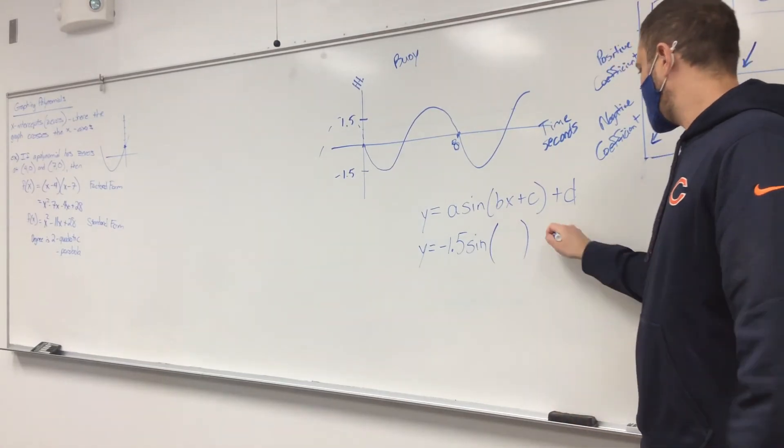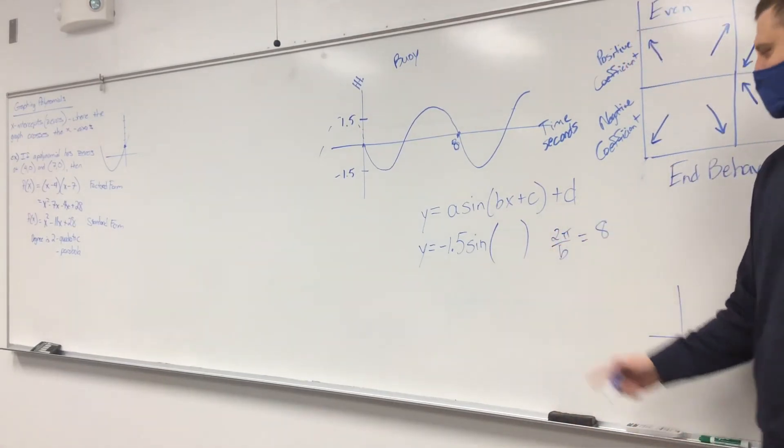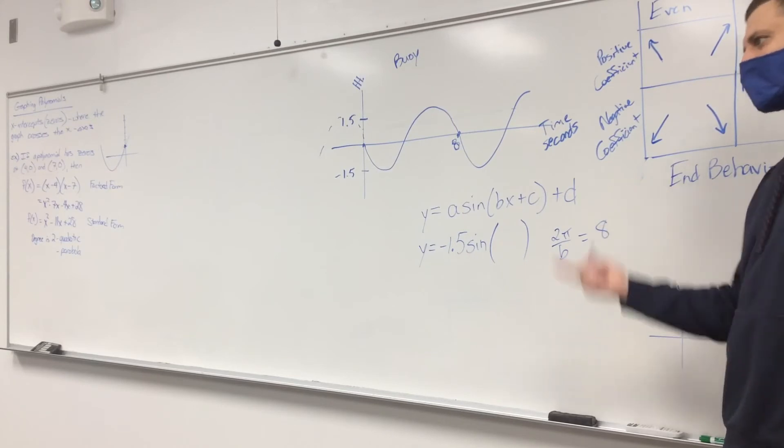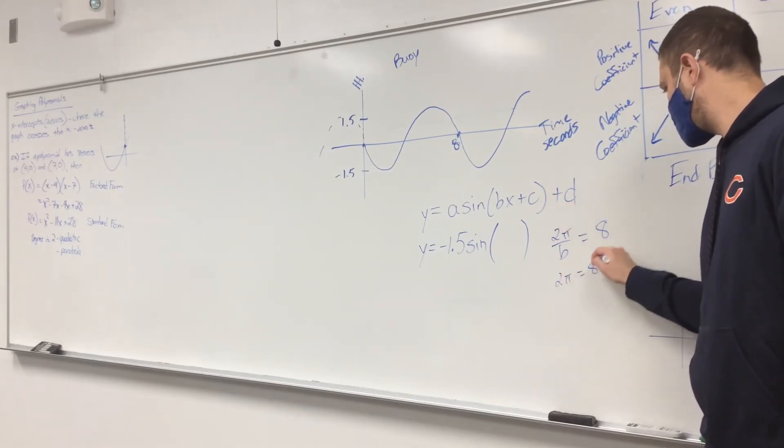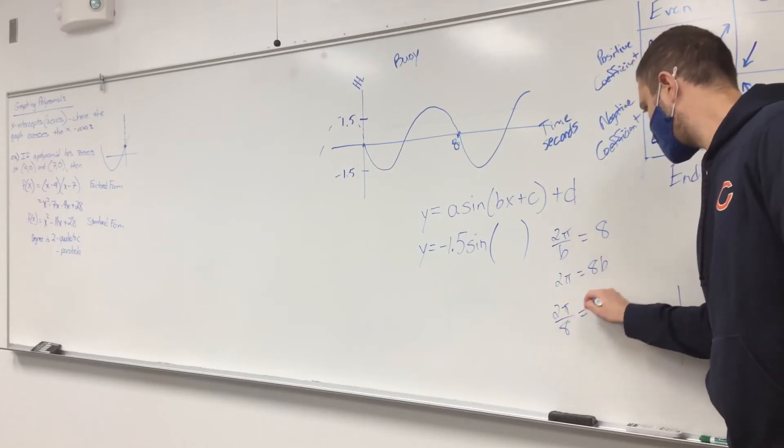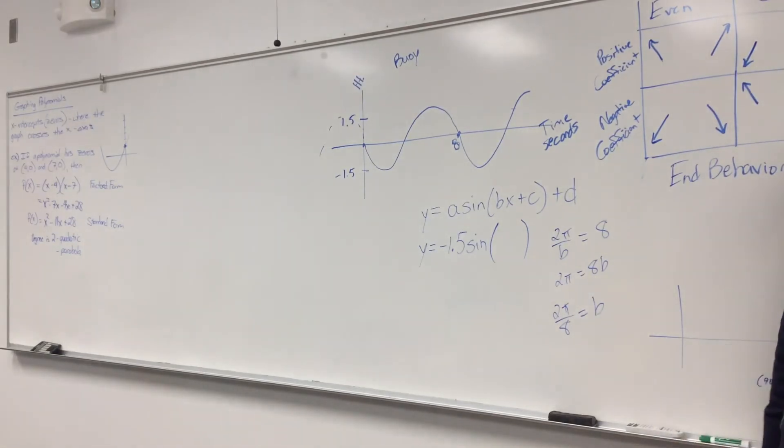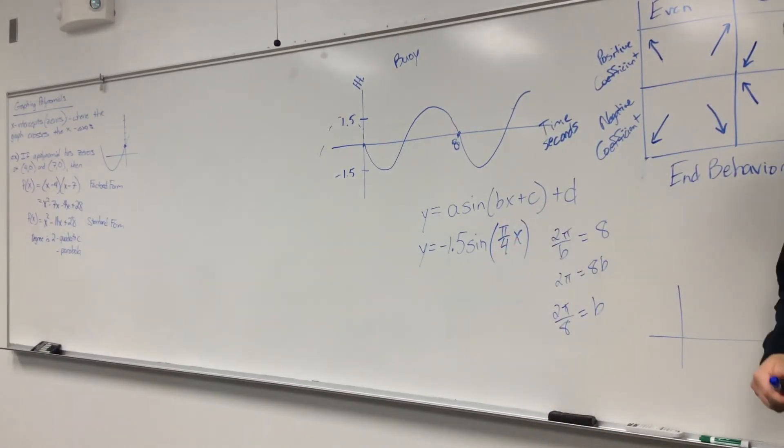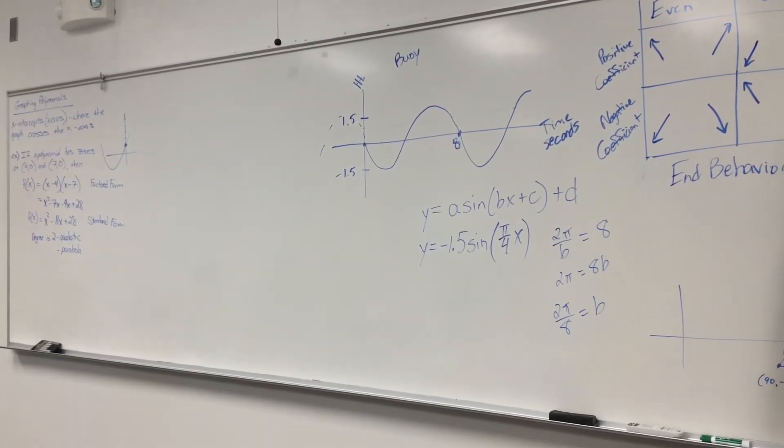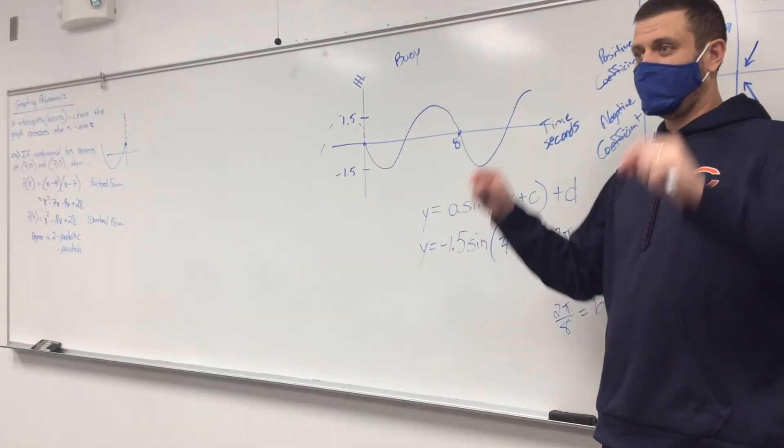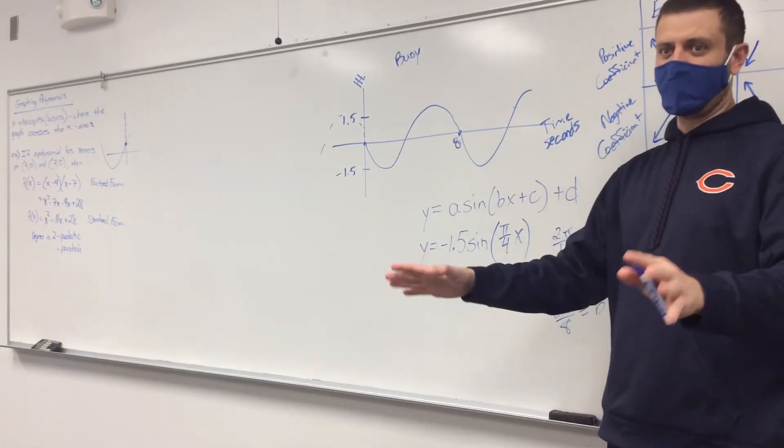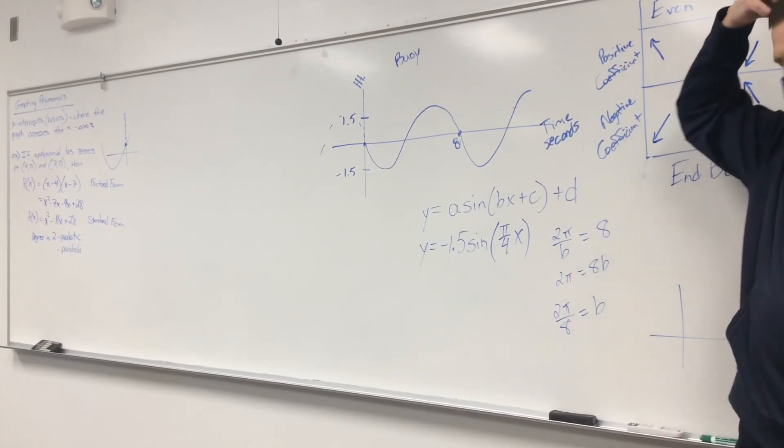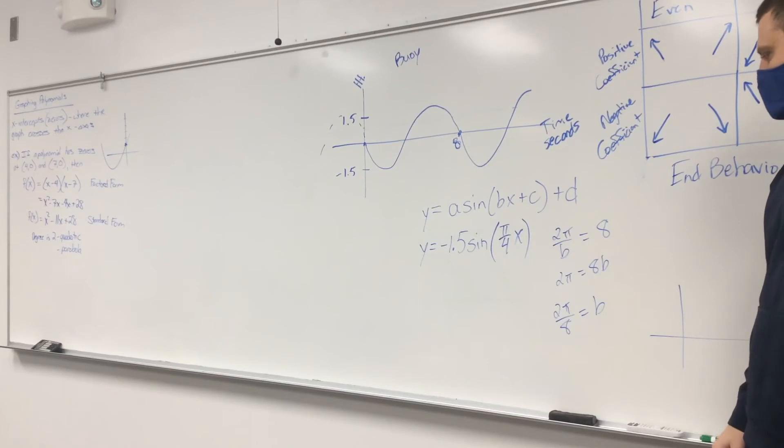So the period is 8. 2π divided by B has to equal 8, right? Because 2π divided by the B value equals the period. Multiply by B, divide by 8. That was probably a lot. Here we go. π over 4. Say this, can you just put 8 in for B? No. Are you joking me? Oh wait, yeah, never mind. Yep. Remember, the period is not the B value. The period is not the B value. You use the period to get the B value. Yeah, I meant like put it in for just 2π over 8, and then it would just be π over 4.